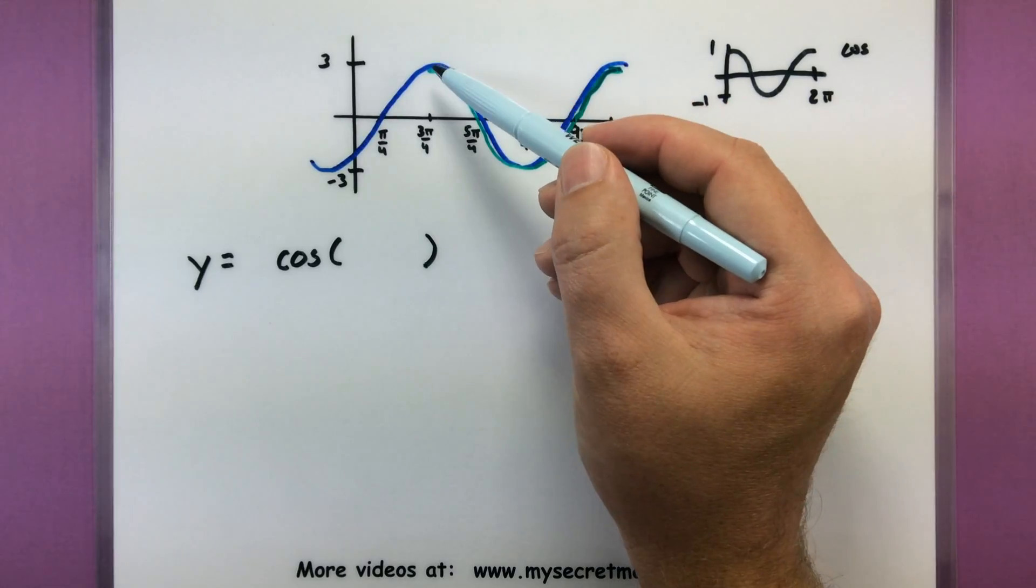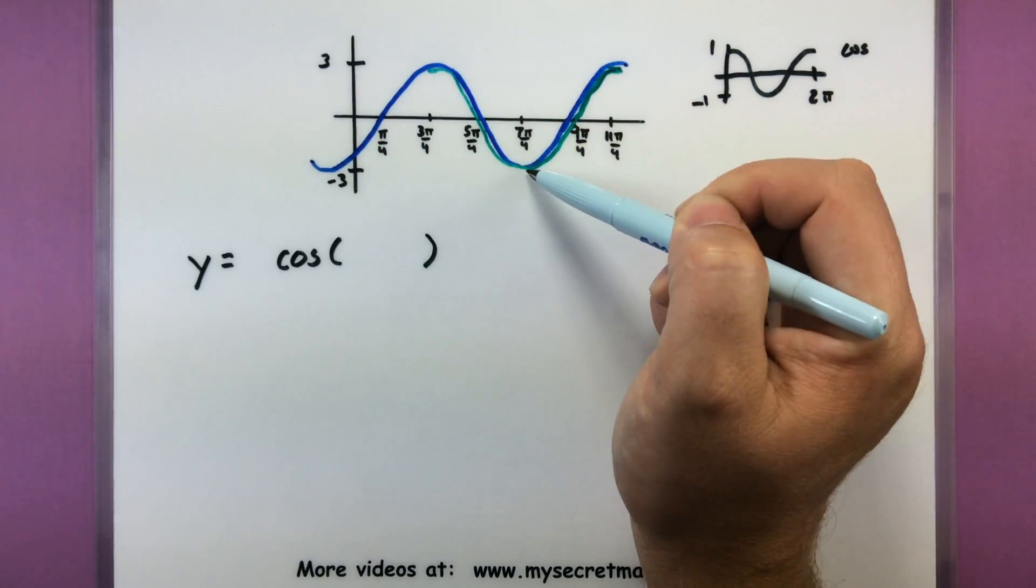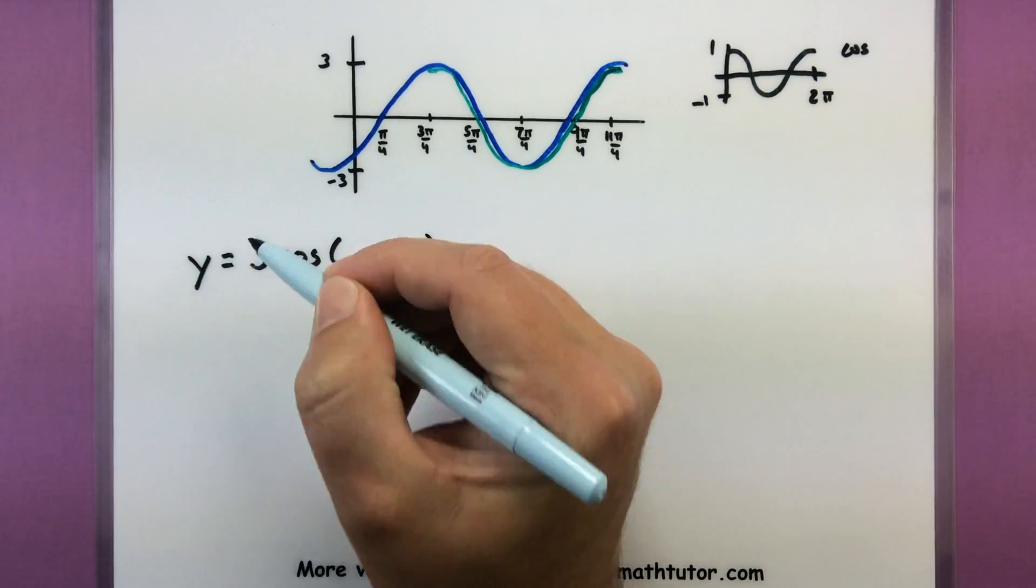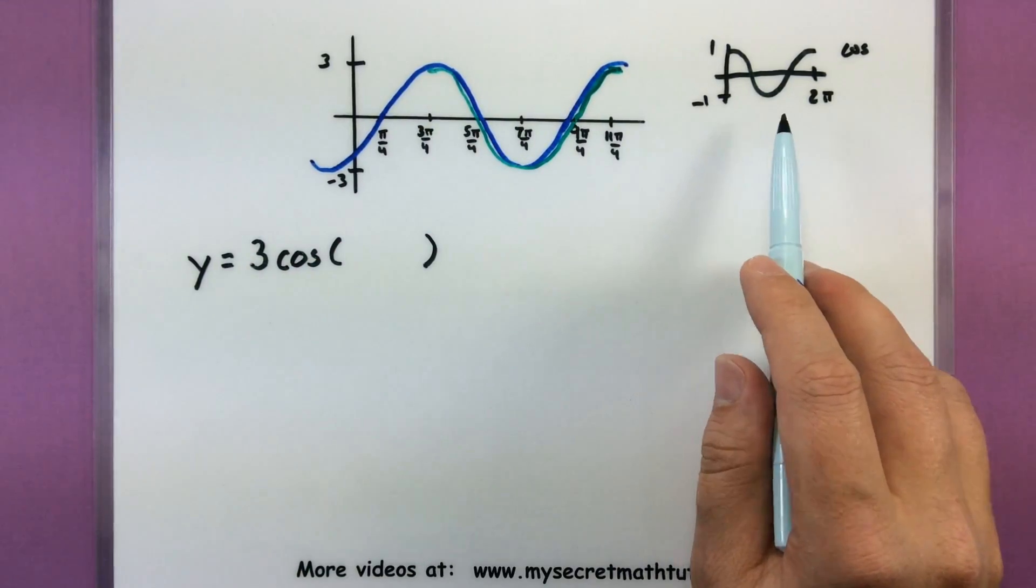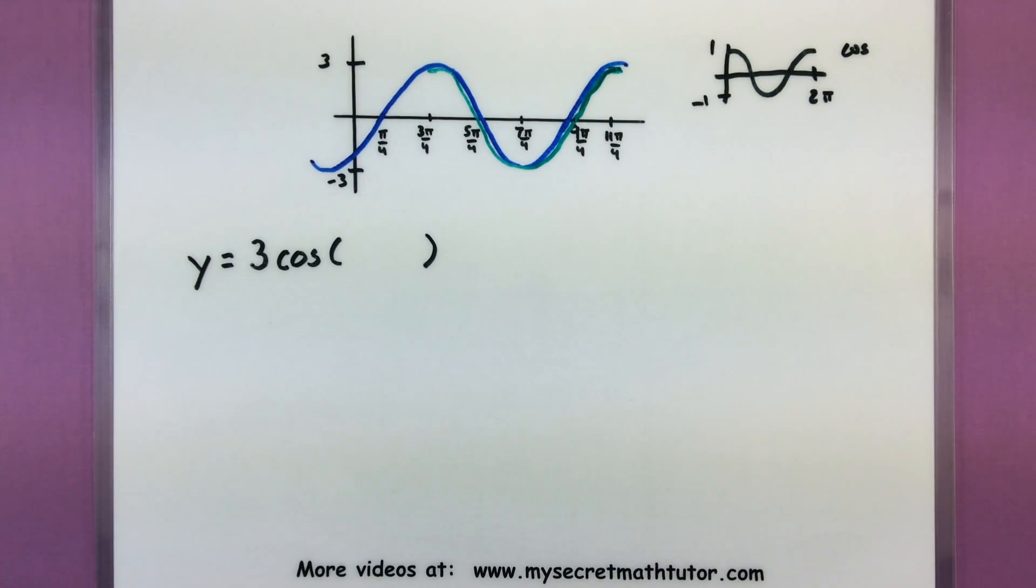So y equals cosine and then let's see what we need to put on the inside. All right, amplitude, maximum value at three, minimum value down here at negative three, so amplitude of three. This has not been flipped over. It's the same orientation, so let's keep that positive.